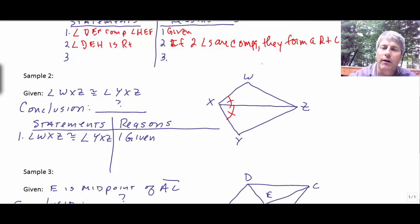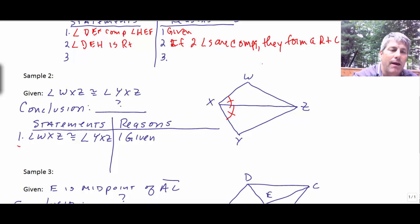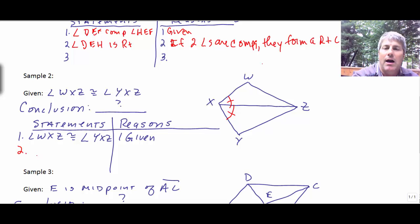These two angles are congruent. And angle X, or WXY, that big angle, has been split into two congruent angles. Well, guess what? Angle WXY has been bisected by ray XZ. So, we would say, ray XZ bisects angle WXY.